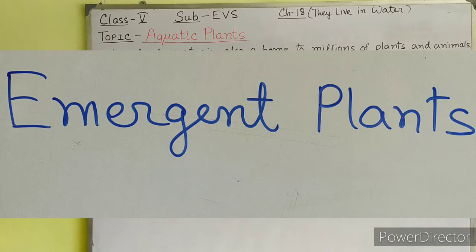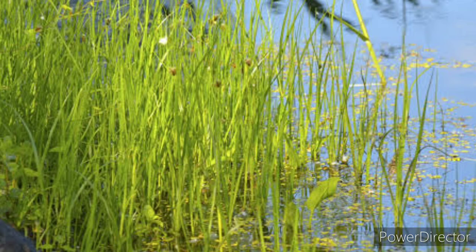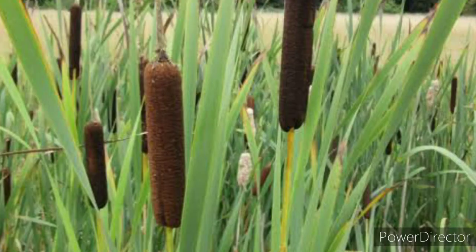Next, we will learn about emergent plants. Emergent plants usually grow in wetlands and along the shore where water is not too deep. Their lower parts are often submerged underwater. They have long, narrow leaves that extend out of water. This helps them to bend easily with water waves or high winds. Some examples of emergent plants are bulrush and arum lily.